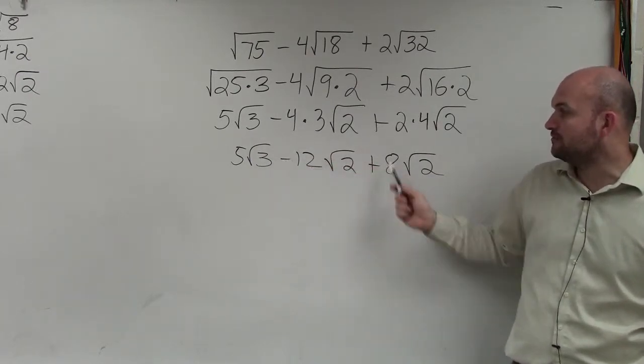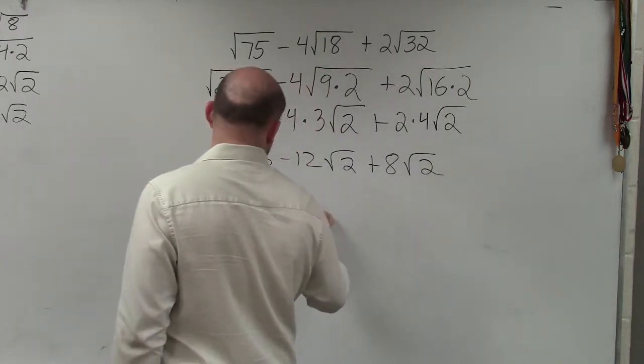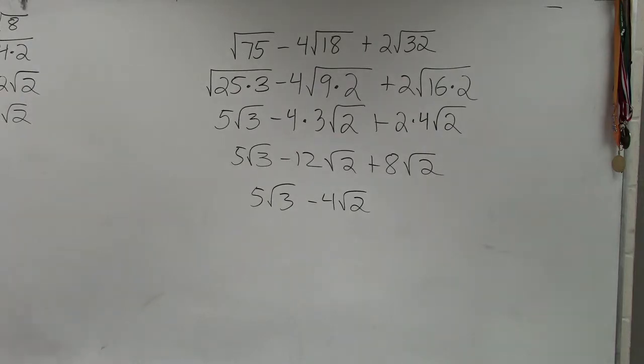So therefore we had 5 square root of 3, and then these two, negative 12 plus 8 would have given you a negative 4. So I have 5 square root of 3 minus 4 square root of 2. And that is your final answer.